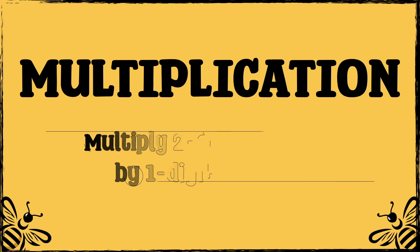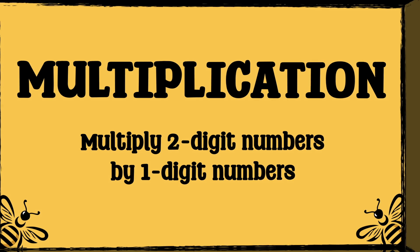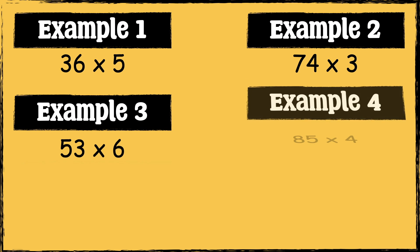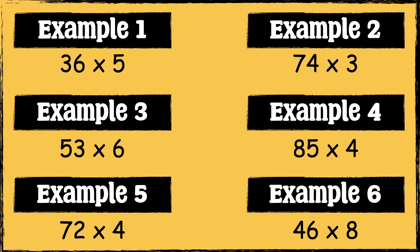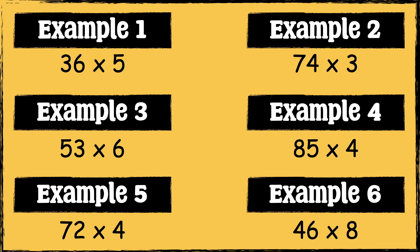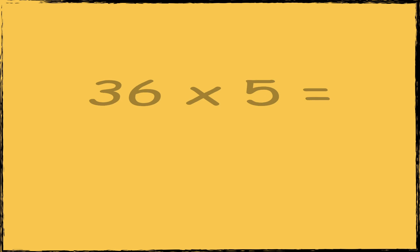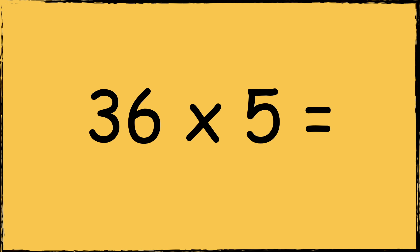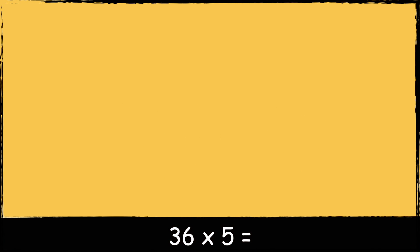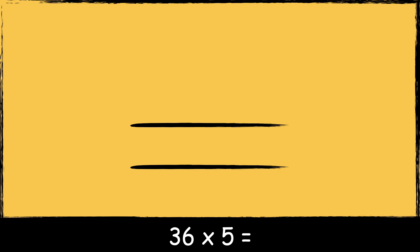In this video we're going to be multiplying two-digit numbers by one-digit numbers. I'm going to work through six different examples. If you'd like to have a go at these examples yourself before we go through them, pause the video and press play when you're ready. Here is a calculation: 36 times 5. It's crucial to align the numbers accurately when using written methods, so we have the ones in the ones column and the tens in the tens column.